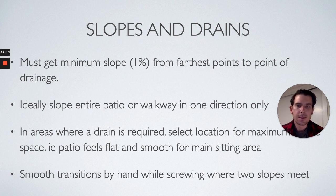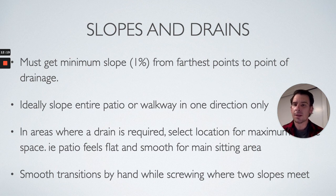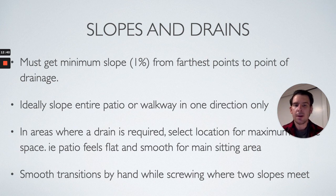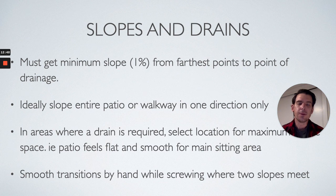Ideally we want to slope the entire patio or walkway in one direction — that helps it all feel nice and flat. Sometimes we're tied to having a drain in a more awkward spot, like if there's bench seating around the patio. In areas where a drain is required, set it up for the maximum usable space. Don't just throw a drain in anywhere — select where you want it based on the actual use of the patio, not just what makes sense structurally, but what works for your clients' use in the future.